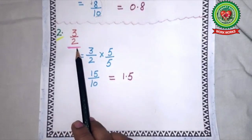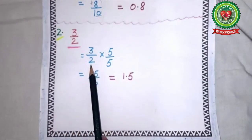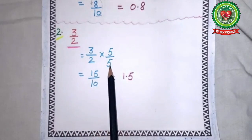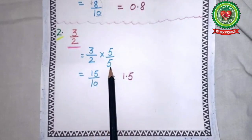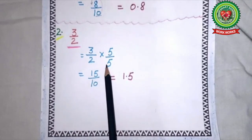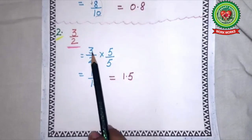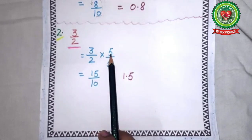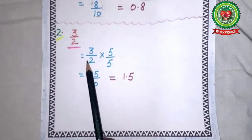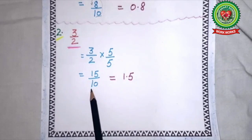3 upon 2 — we will multiply it by 5/5 because the denominator is 2. So: 3/2 × 5/5. 3 × 5 = 15, 2 × 5 = 10. Now it is 15 upon 10.